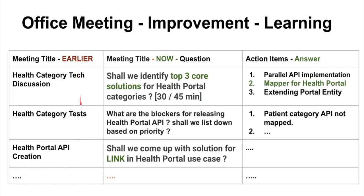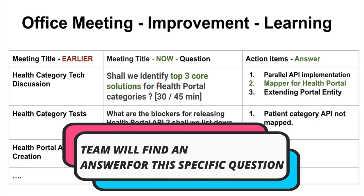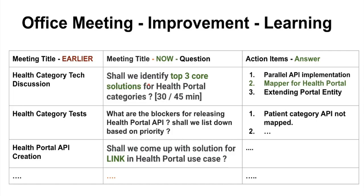Now I changed the way I conduct and title the meeting. Instead of keeping it very abstract, for example 'health category tech discussion', I change it to a specific question like 'Shall we identify the top three solutions for health portal categories?' So within 30 to 35 minutes, the entire team will try to find an answer for this very specific question instead of something too broad.